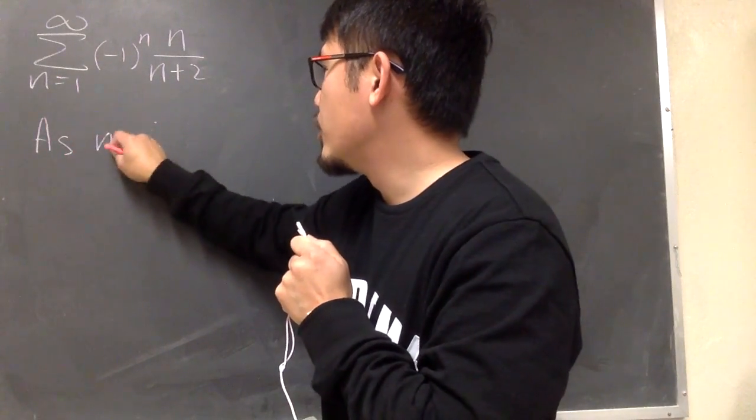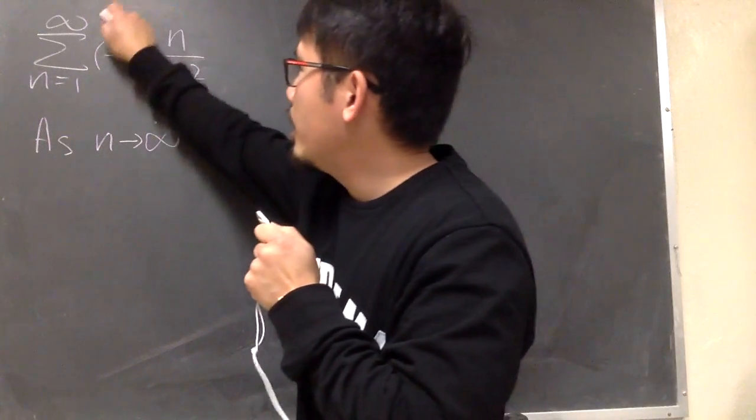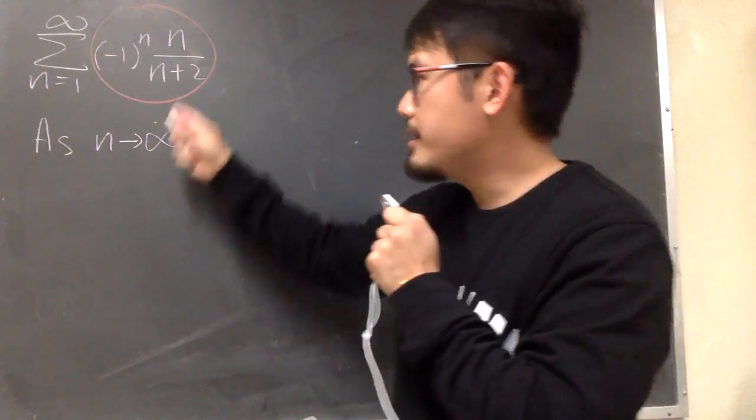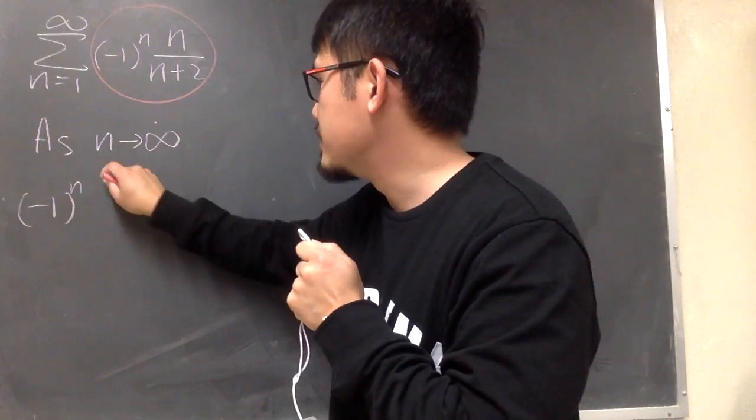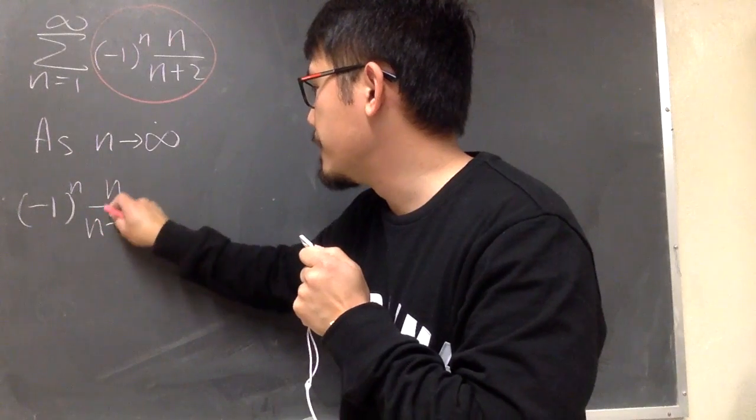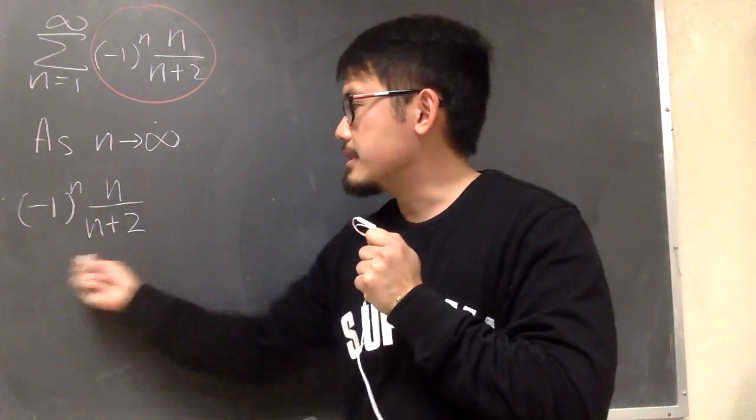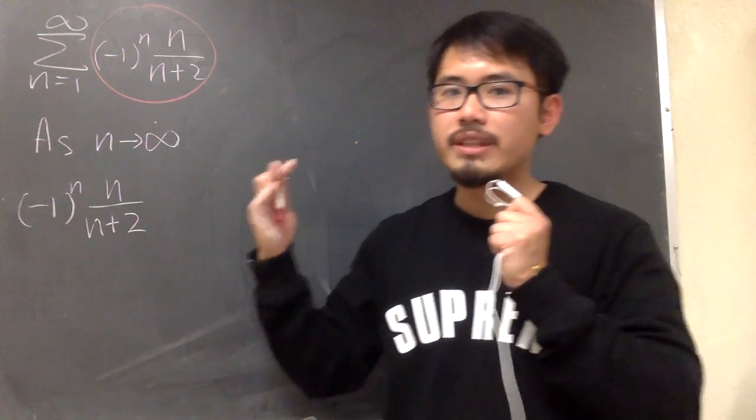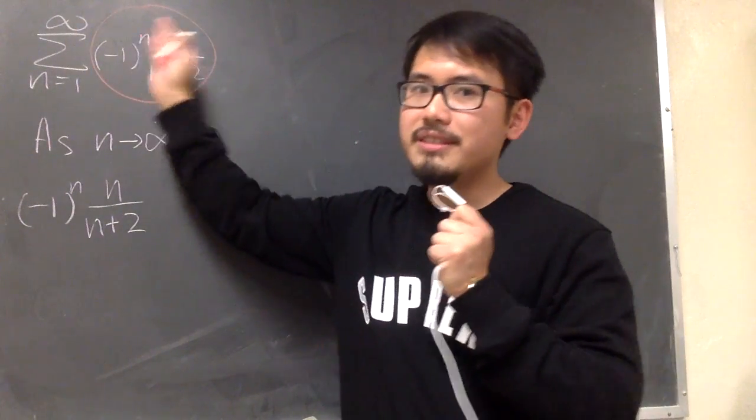So we'll put down as n goes to infinity. And we take a limit of the original, this formula right here. And let me write it down again here, negative 1 to the nth power times n over n plus 2. As long as we can show this does not approach 0, then by test for divergence, we can say the original series diverges.